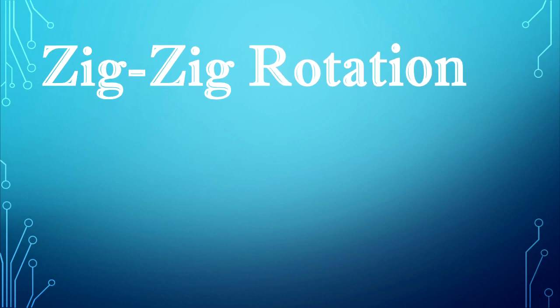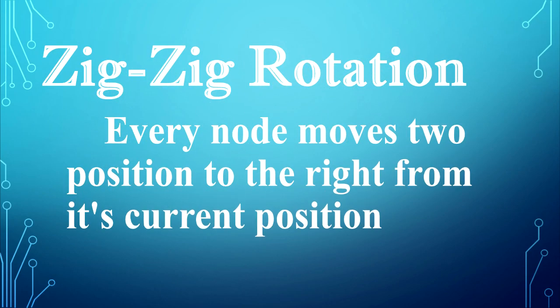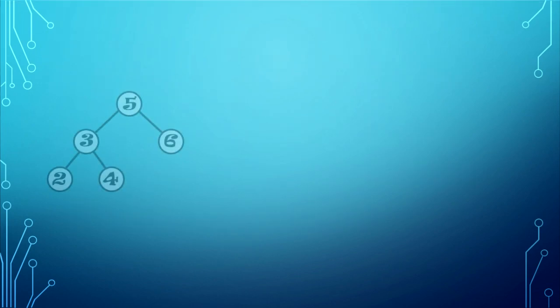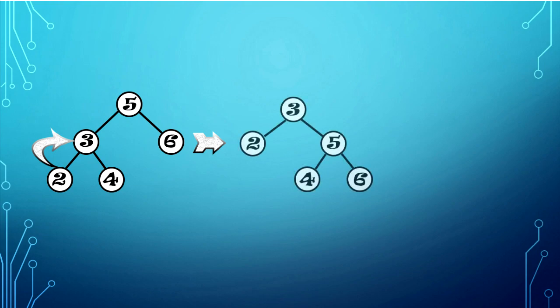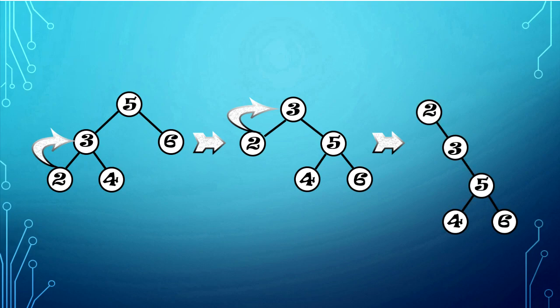Zig-zig rotation. In zig-zig rotation, every node moves two positions to the right from its current position. We will splay element 2 using zig-zig rotation. The element 2 will be moved twice to the right. In the first rotation, element 3 will be the new root node, and the previous root node, element 5, will be the right child, and the left child will be element 2. Then, move element 2 again to the right. The result will be: element 2 will be the new root node, and element 3 will be its right child along with the other nodes.